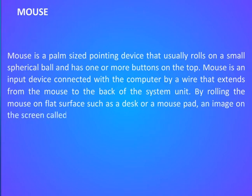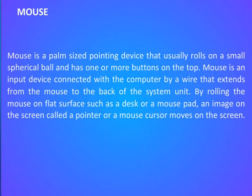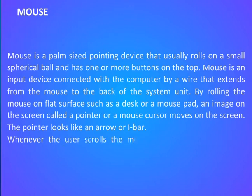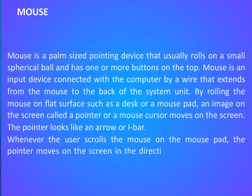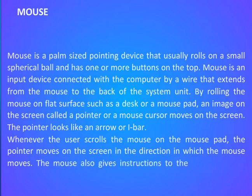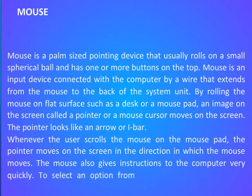The pointer looks like an arrow or I-bar. Whenever the user scrolls the mouse on the mouse pad, the pointer moves on the screen in the direction in which the mouse moves. The mouse also gives instructions to the computer very quickly to select an option from the screen.